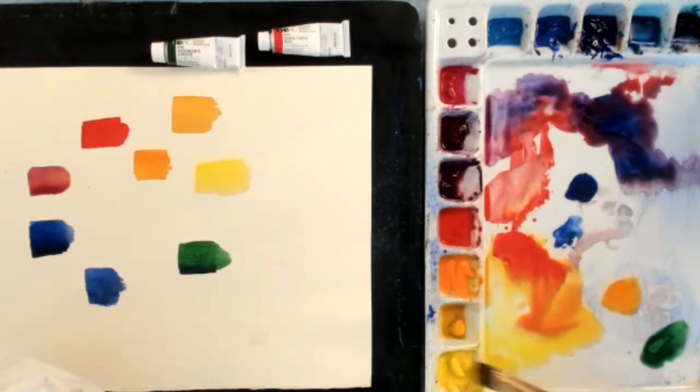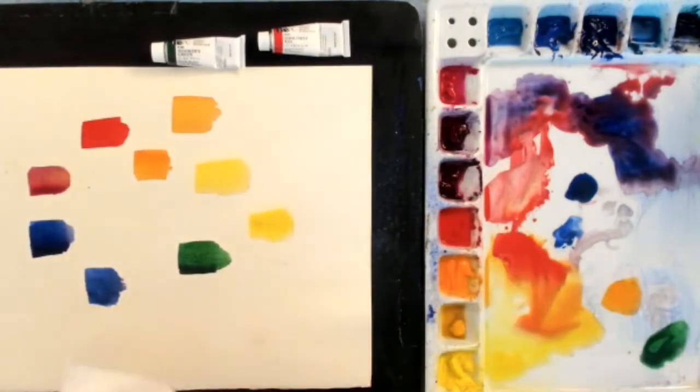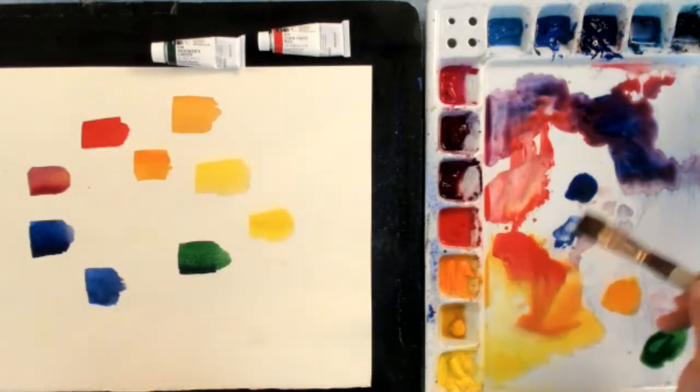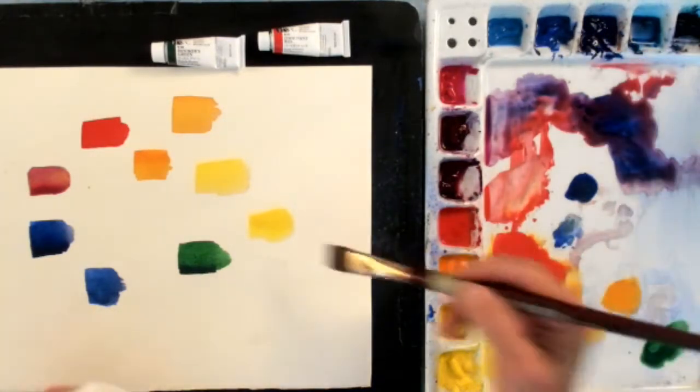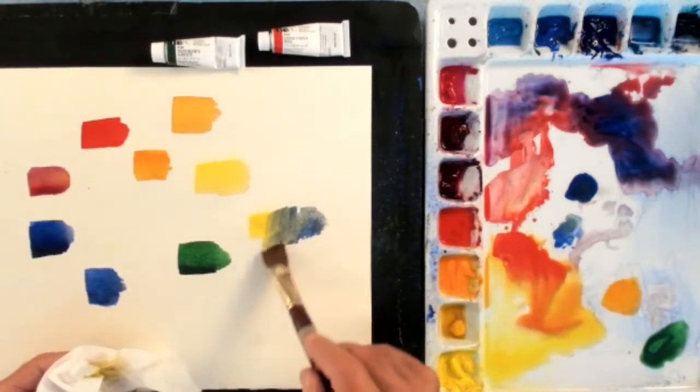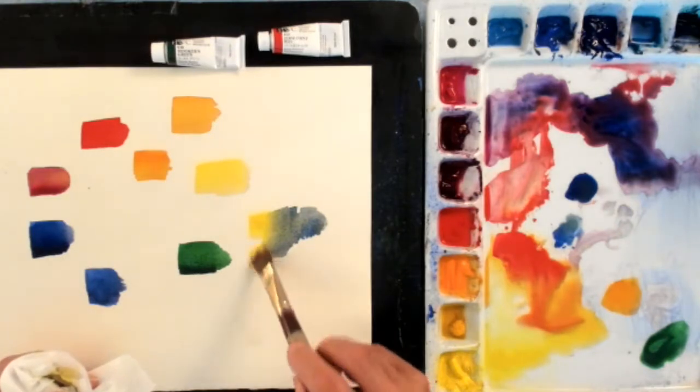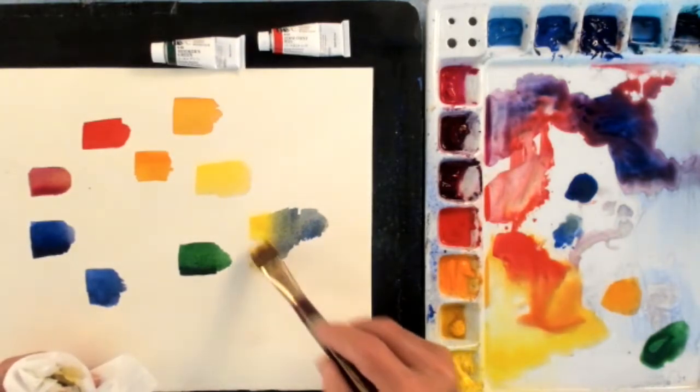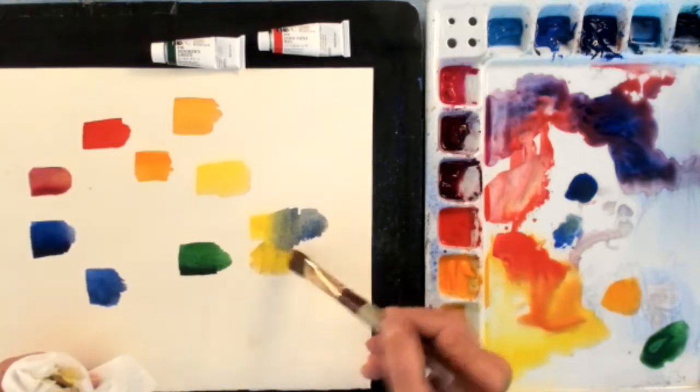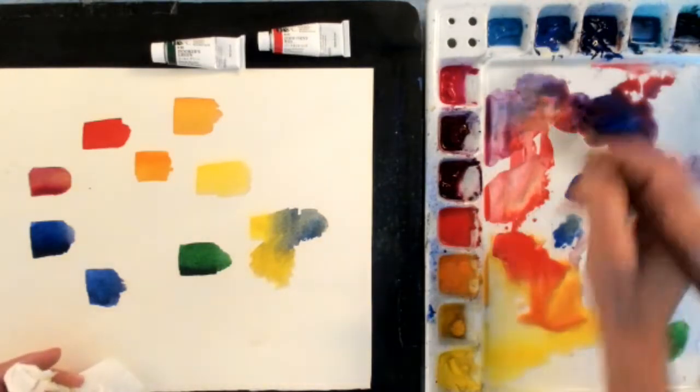So if I take the yellow lemon from the palette, and then I rinse that out, and I pick up the cobalt blue, and I mix those together on the paper. And see the blue is a little stronger. Usually if you have two colors you're going to mix, the darker color is going to take over. So you really have to think about putting more of the lighter color into your mix in order for it to come out what you're looking for.